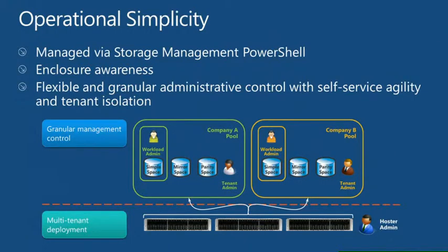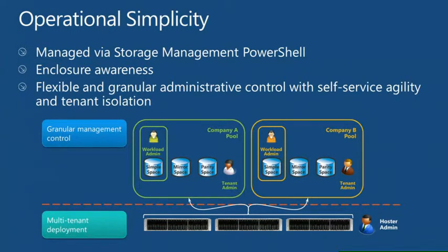Regarding simplicity, the first thing to consider is enclosure awareness. When you have two, three, or four JBODs, you can spread mirrors across them. That enables you to endure an entire array failure — if one drive array loses connectivity or power, enclosure awareness ensures one half of the mirror is on the remaining JBOD and the other half is on the failed one, keeping data accessible. This happens automatically as soon as you enable enclosure awareness.